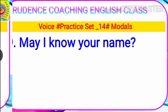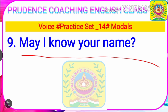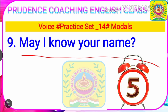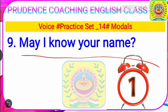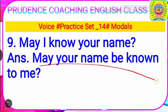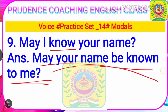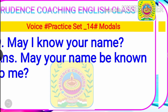Question number nine: 'May I know your name?' Your time starts now. Time ends. The final answer is: 'May your name be known to me?' Note: 'to' is followed here, so it is 'may your name be known to me.'